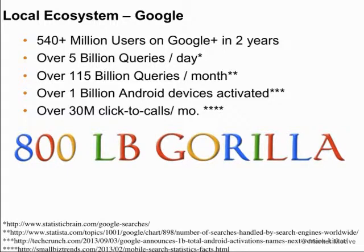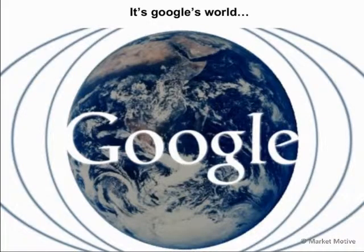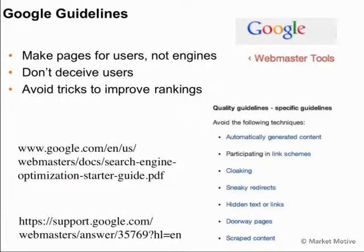People have even started to say 'I Google it' instead of 'I search for it.' They have the dominant market share. So when we talk about search engine optimization, we're really talking about Google optimization. Most of the time, we're specifically talking about Google. It's Google's world — we're just living in it. And because of that, we need to abide by and understand the Google guidelines. We're playing within their world; we need to know their rule set.